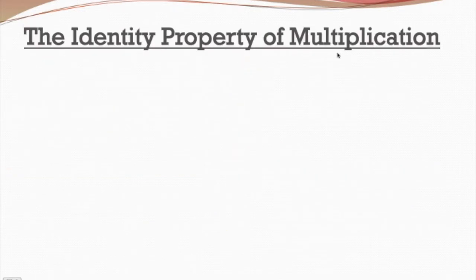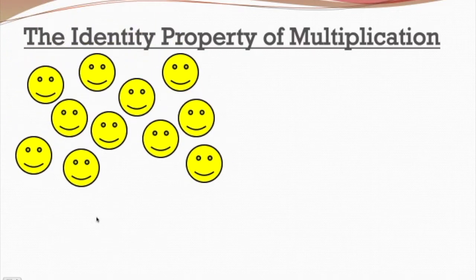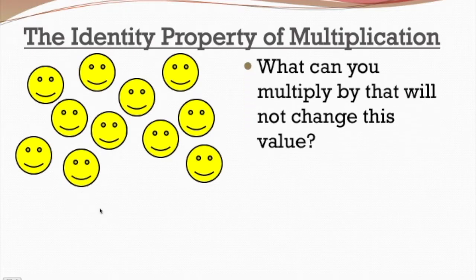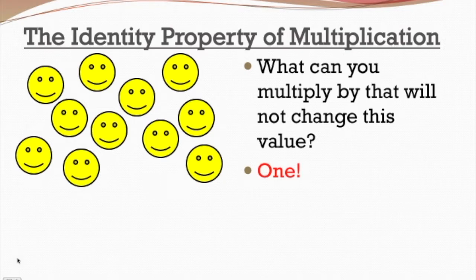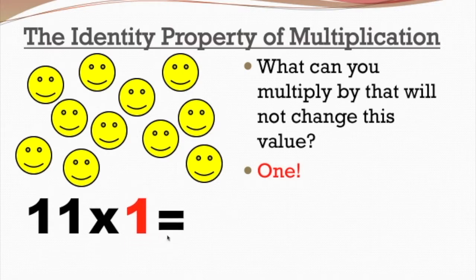How about the identity property of multiplication? Let's say we started off with all these happy faces. What can I multiply by that will not change my initial value, my initial identity of this number? Well, I can just multiply by 1. Let's count how many happy faces we have: 1, 2, 3, 4, 5, 6, 7, 8, 9, 10, 11 happy faces. What can I multiply 11 by that will not change 11? The answer is 1. So 11 times 1 equals 11.